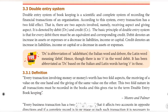The accounting cycle of bookkeeping is a scientific and complete system of recording the financial transactions of an organization. According to the system, every transaction has a two-fold effect — there are two aspects involved, namely the receiving aspect and the giving aspect. It is denoted by debit and credit. The basic principle of the double entry system is that for every debit there must be an equivalent and corresponding credit. Debit denotes an increase in assets or expenses, or a decrease in liabilities, income, or capital.